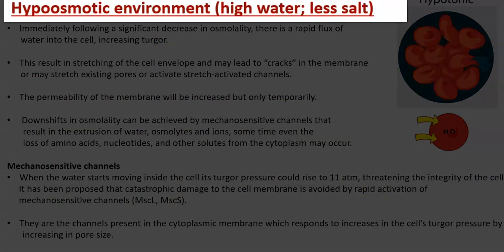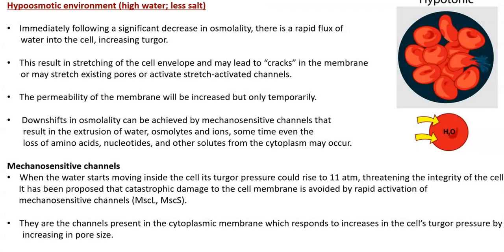Next, we look at the hypoosmotic environment — the condition in which a high amount of water and less salt is present. In a hypoosmotic environment, a decrease in osmolality results in a rapid flux of water into the cell, increasing the cell turgor. This results in stretching of the cell envelope, which may lead to cracks in the cell membrane, stretch existing pores, or activate stretch-activated channels inside the cells.